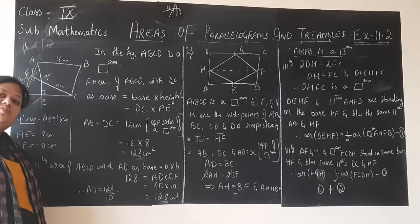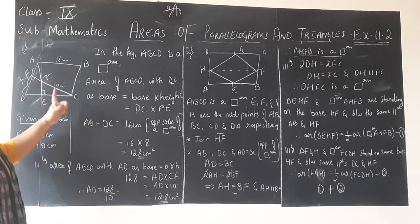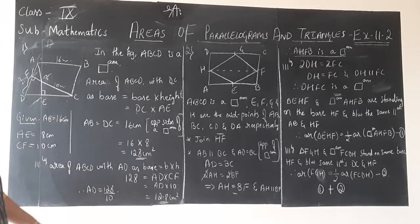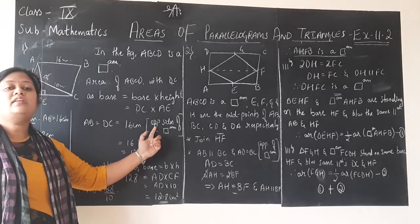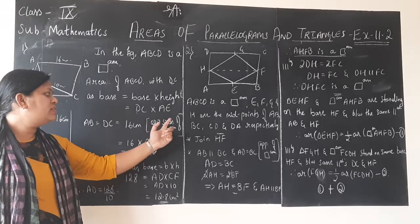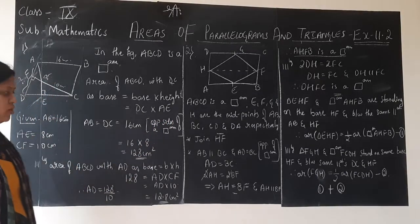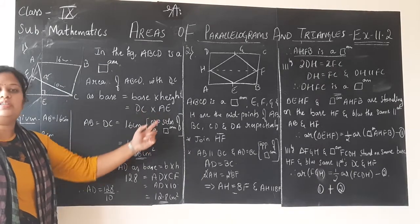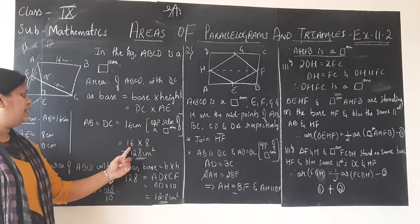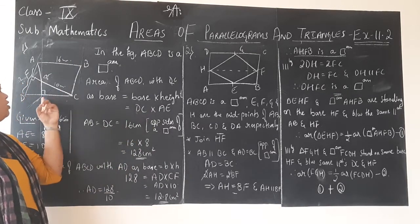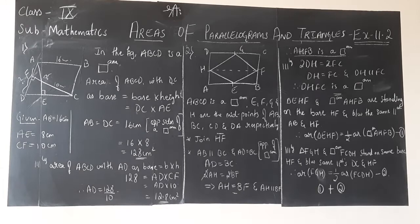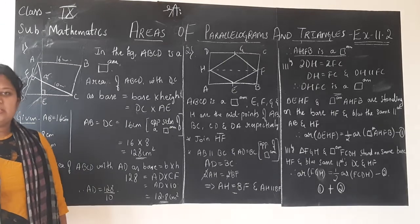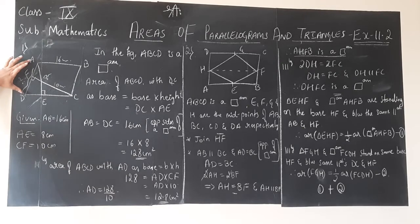Now substituting the values: CD is 16 cm and height AE is 8 cm. So 16 into 8 gives us 128 cm² as the area of parallelogram ABCD. In the next case, if BC were given our work would be easier since BC equals AD, but BC is not given. So we take the help of the second perpendicular.